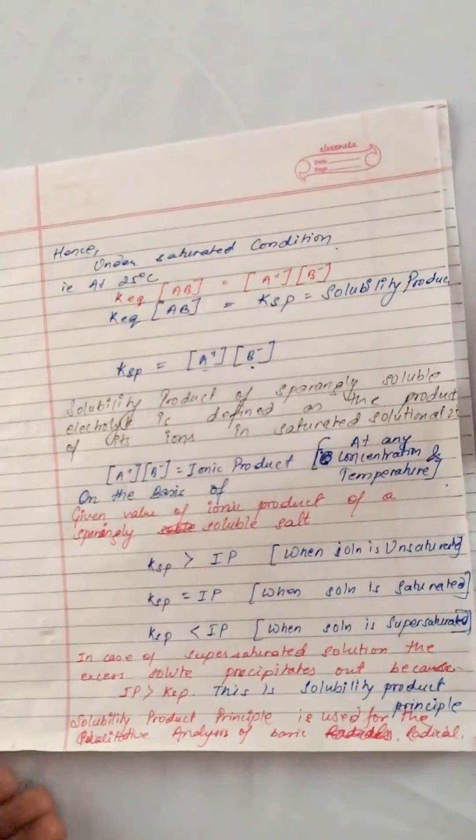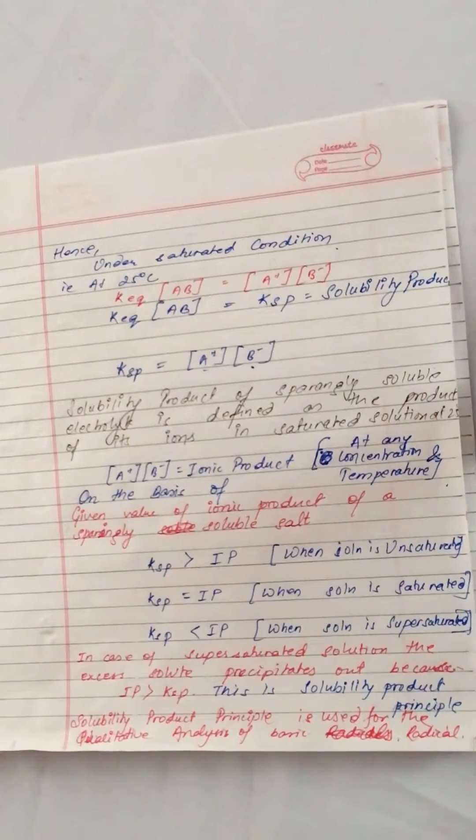In case of supersaturated solutions, the excess solid precipitates out because IP is greater than KSP. This is the solubility product principle. Solubility product principle is used for the qualitative analysis of basic radicals.